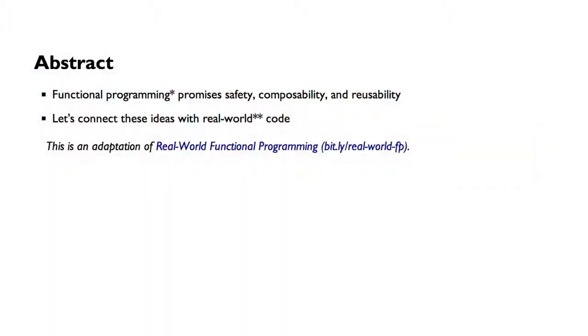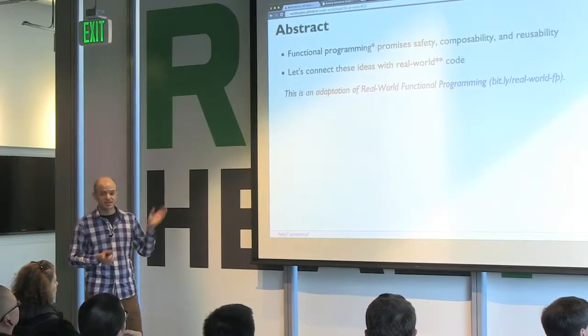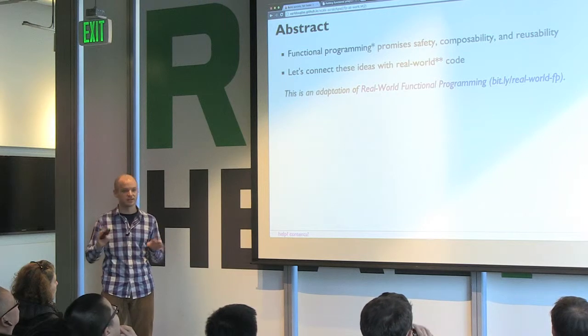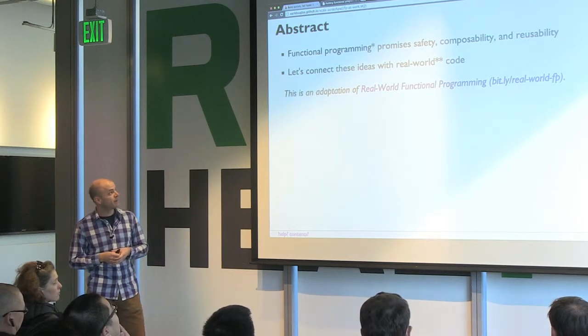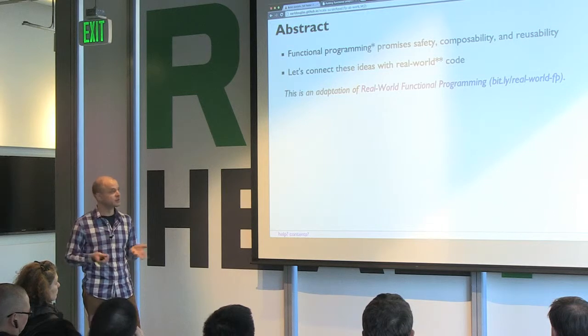I want to try to bridge those two worlds a little bit and use an example from code that I actually write at work at Vercel, and hopefully show you how you can do some of the same kinds of things. The scope of this is functional programming, promises, safety, composability, reusability — lots of fun buzzwords — connected with actual code that can do real things.